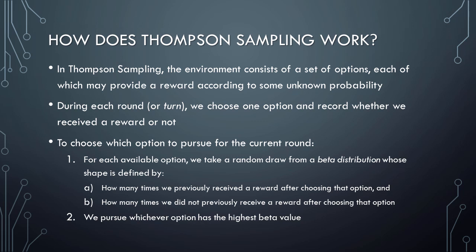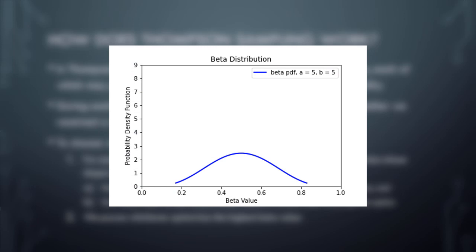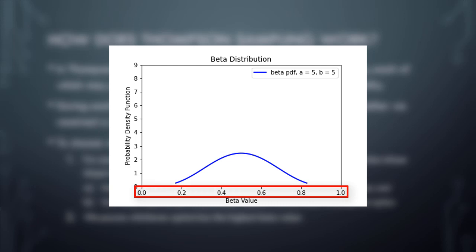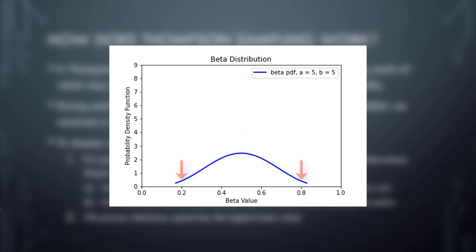Now, to really understand how all of this works, we need to learn about beta distributions. Instead of trying to learn from a bunch of mathematical equations, I think it's much easier to understand these concepts through diagrams. What you see here is an example of a beta distribution. The beta distribution is a probability distribution, which means that the shape of this curve tells us something about how likely it is that something will happen. Notice that the set of possible beta values ranges from 0.0 to 1.0. This curve tells us how likely we would be to get any specific value between 0 and 1 if we were to choose a value from this distribution at random.